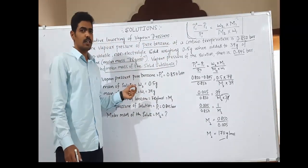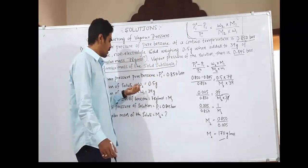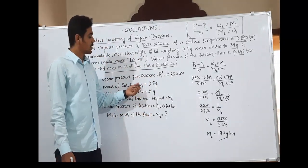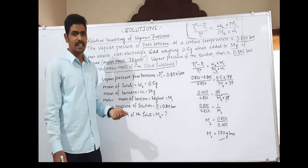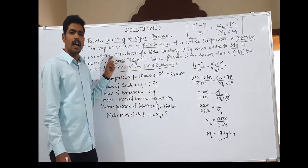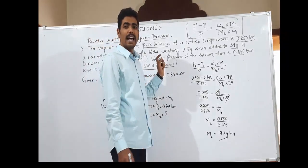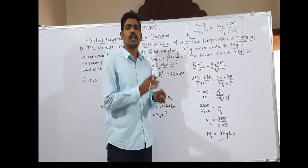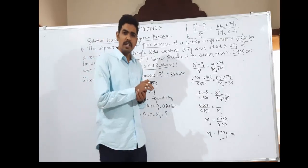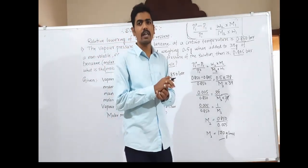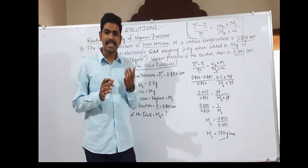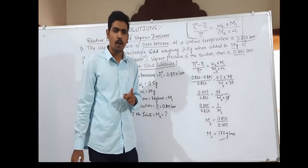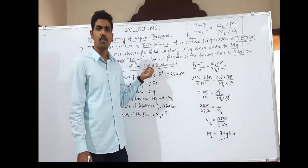This is one of the very important question types. They may ask you to find M1, W2, or W1 by giving other values. This topic is also very important for examinations. Among these four colligative properties — relative lowering of vapour pressure, elevation in boiling point, depression in freezing point, and osmotic pressure — you will get at least one problem on these colligative properties.